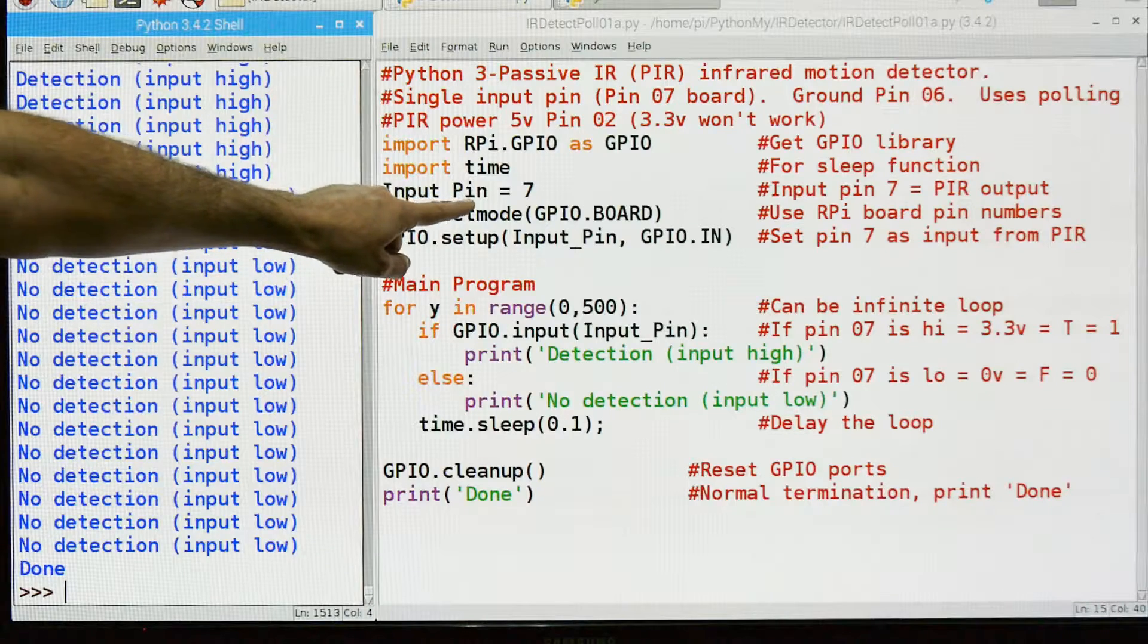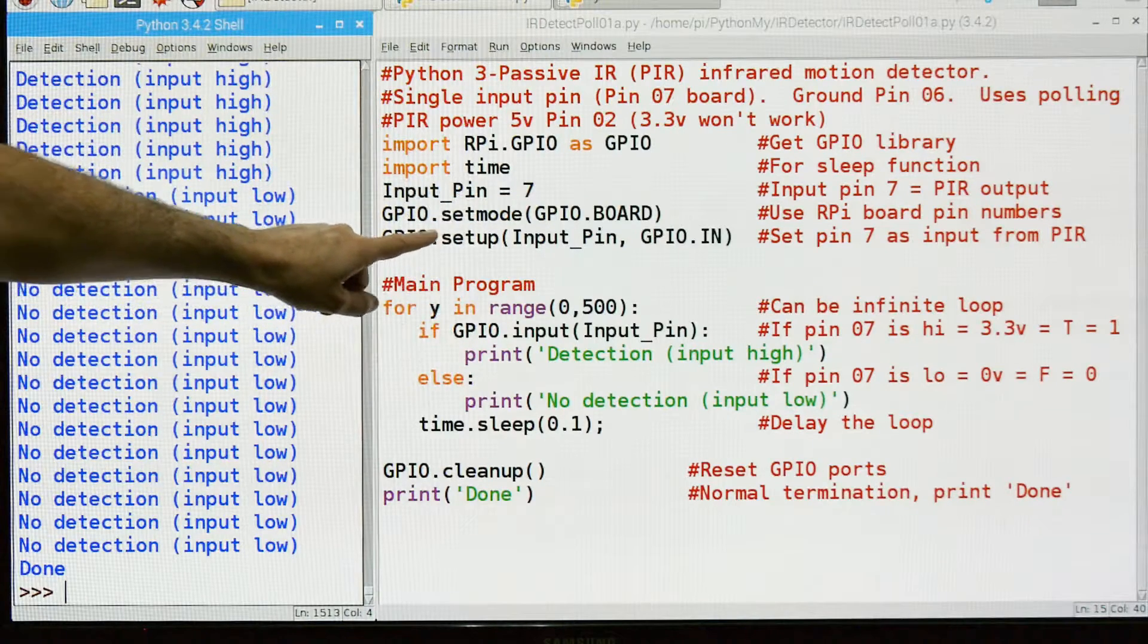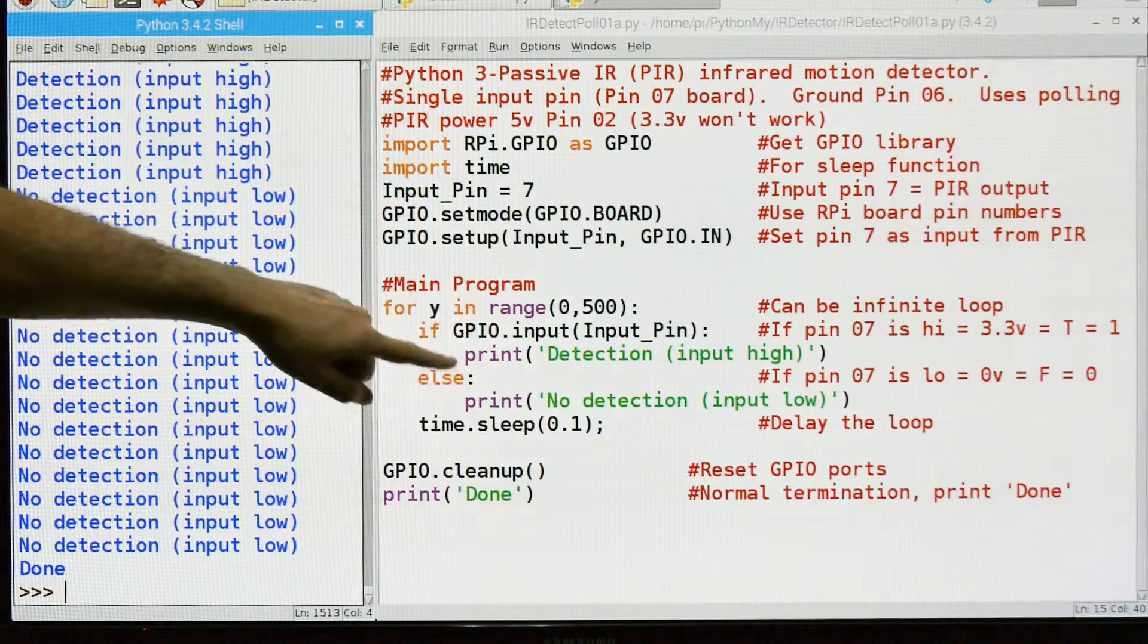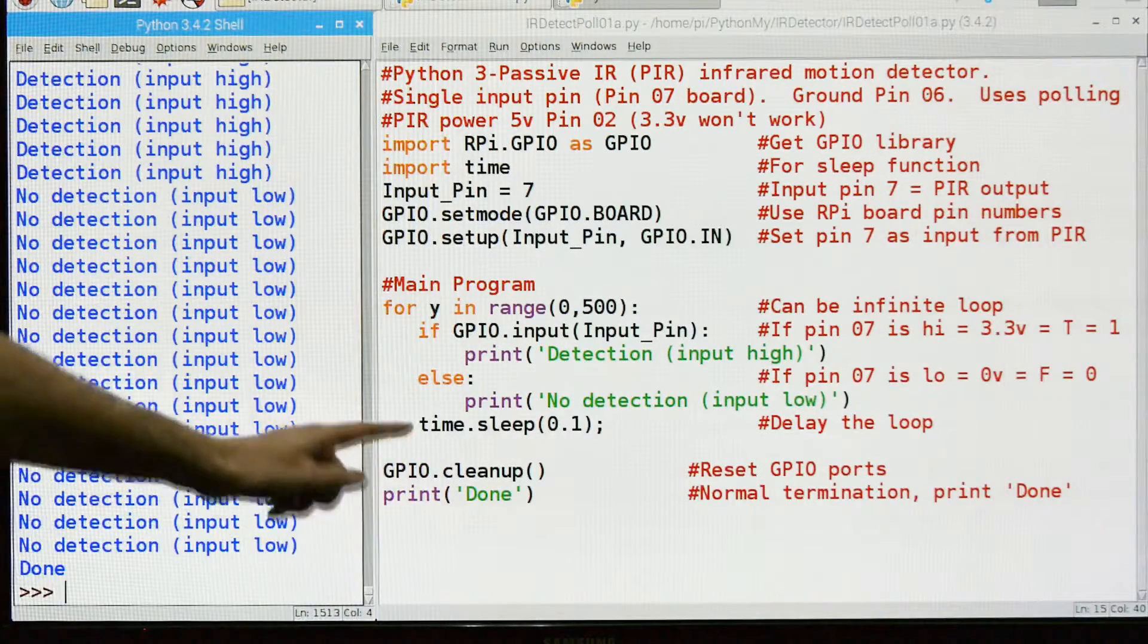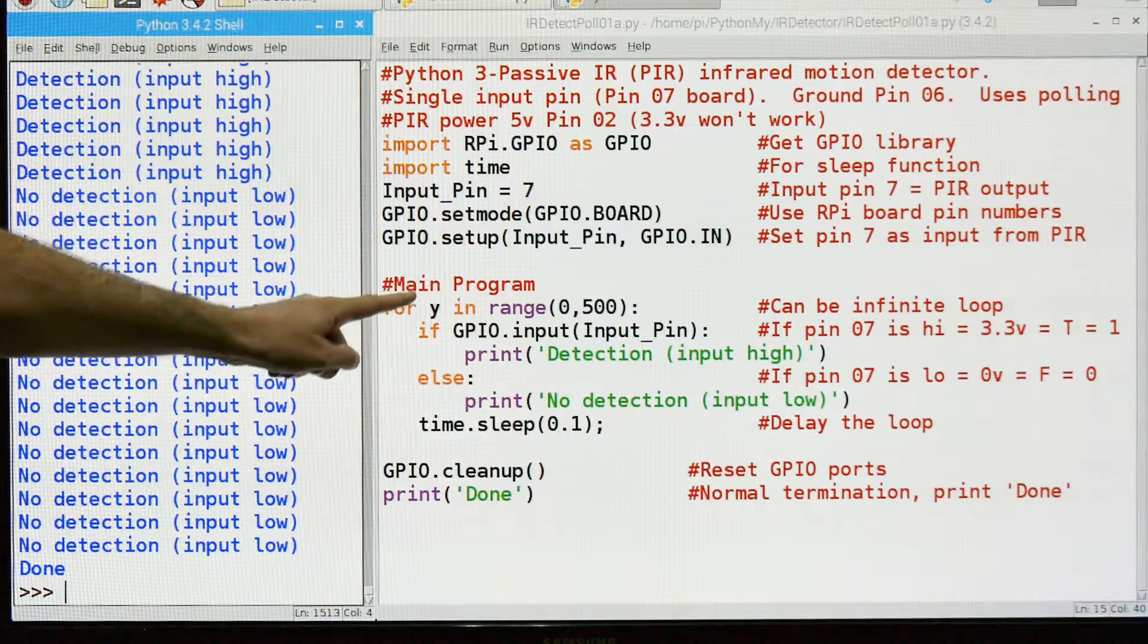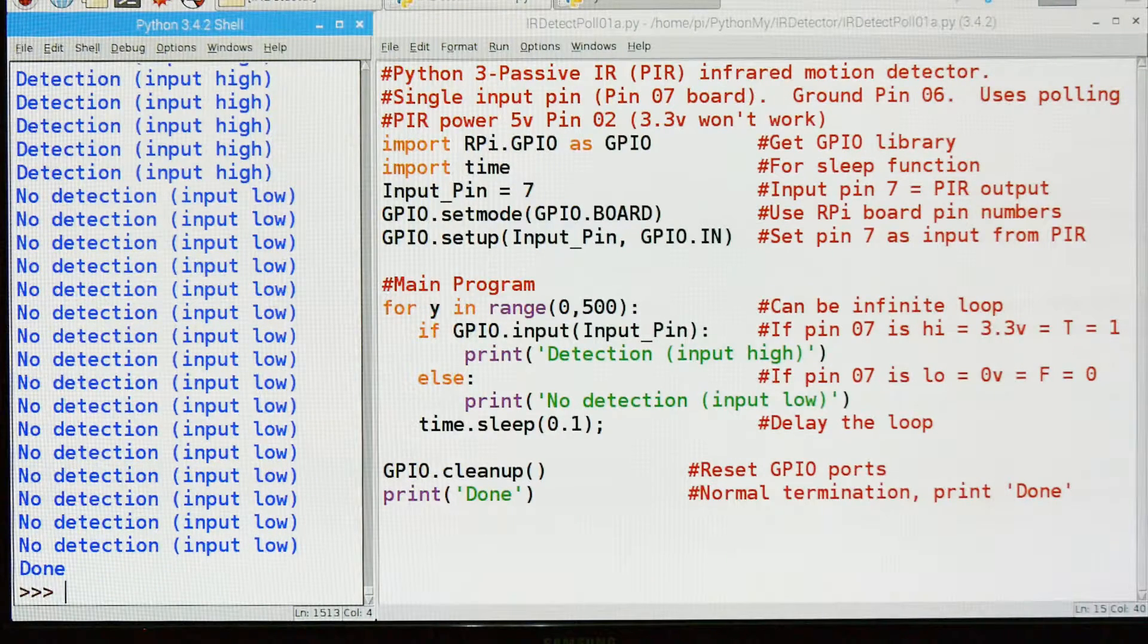We're going to declare our input pin as pin 7. We're going to use the board numbering scheme. And then we're going to set up pin 7 as an input. So let's get down to the interesting part. This is the program that actually does stuff. This is the part of the program that makes things happen.